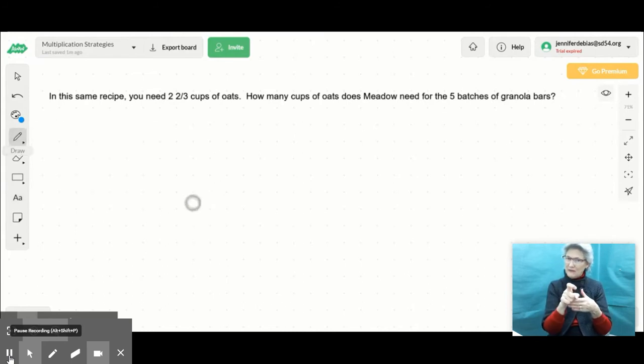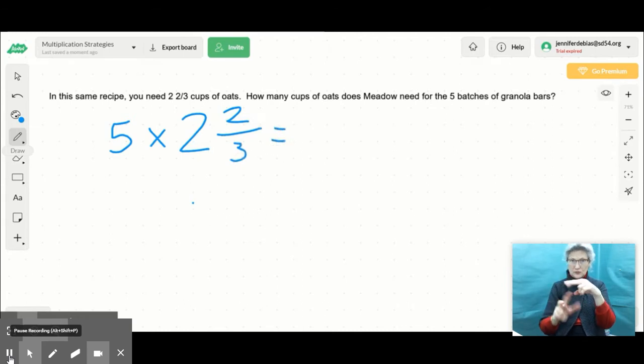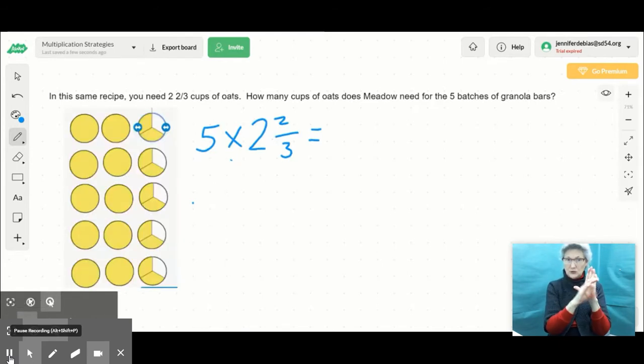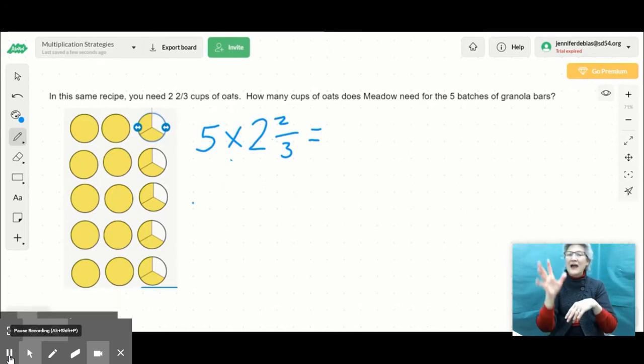So just like before, I think I'm visualizing our equation as 5, because that's the number of batches we're making, times 2 and 2/3 cups of oats. Now this is new because we haven't multiplied a whole number by a mixed number yet. So we're going to explore some different strategies for that. I'm going to draw a model. So here I have the model and what I did was I drew out 2 and 2/3.